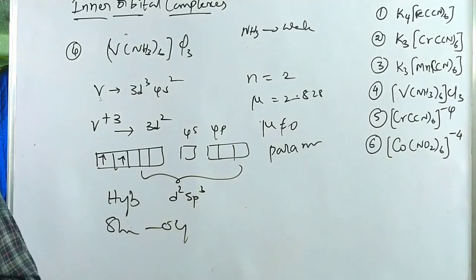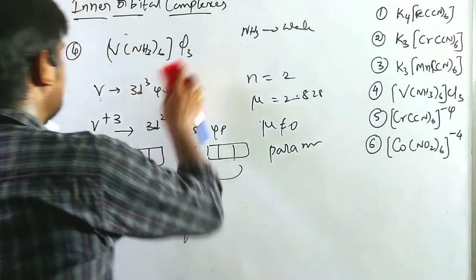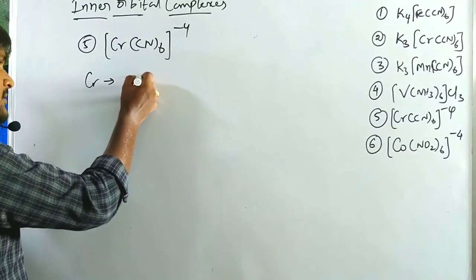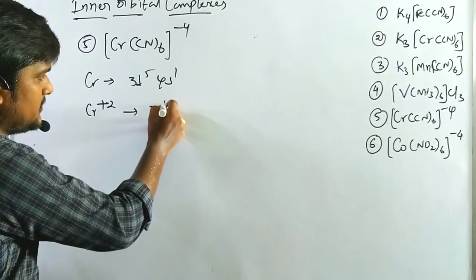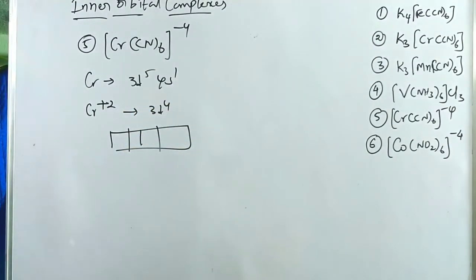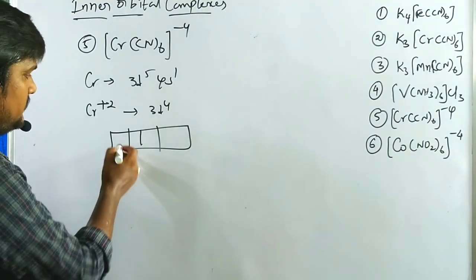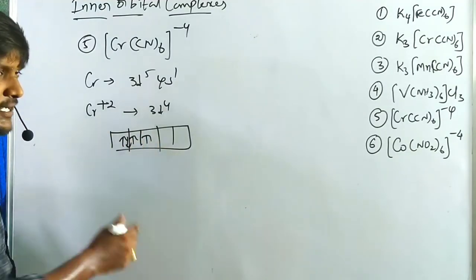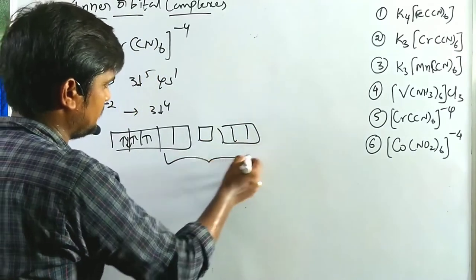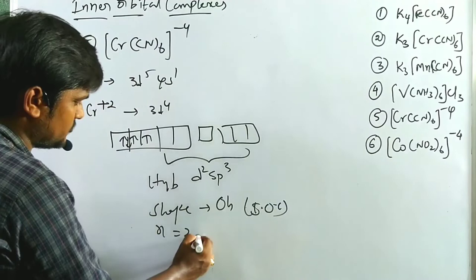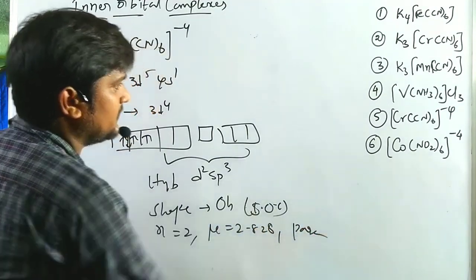Fifth example: [Cr(CN)₆]⁴⁻. Chromium's configuration is 3d⁵4s¹; in +2 oxidation state, it becomes 3d⁴. The fourth electron pairs up from the fourth orbital onwards. Two degenerate 3d orbitals remain vacant. Hybridization is d²sp³, shape is octahedral, inner orbital complex. n=2, μ=2.828, paramagnetic species.